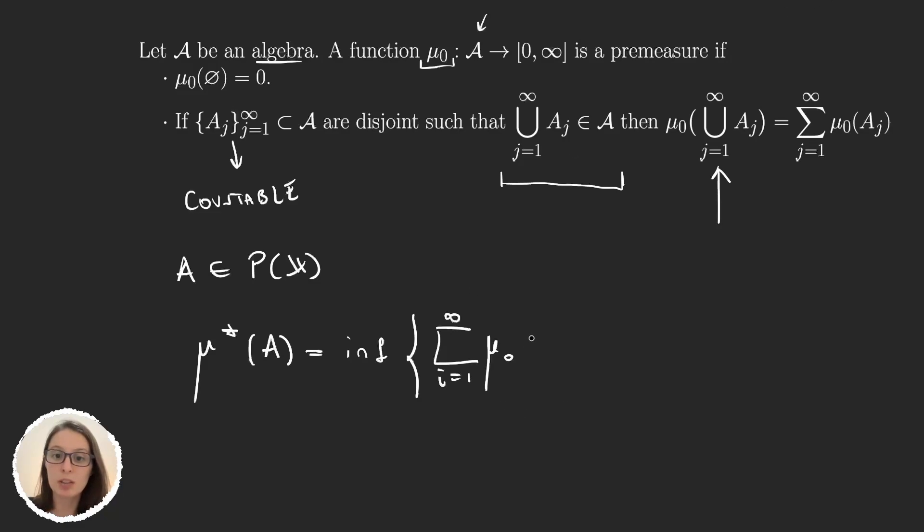over the sum from i equals 1 up to infinity of μ₀ (here in the previous video it's a ρ) of Aⱼ, where Aⱼ's are elements in the algebra where μ₀ is defined, such that A is covered by this union. So what we can do is, we have any set in parts of x, we find a cover by elements in our algebra of A, and then calculate the sum of the premeasures of the elements in that cover.